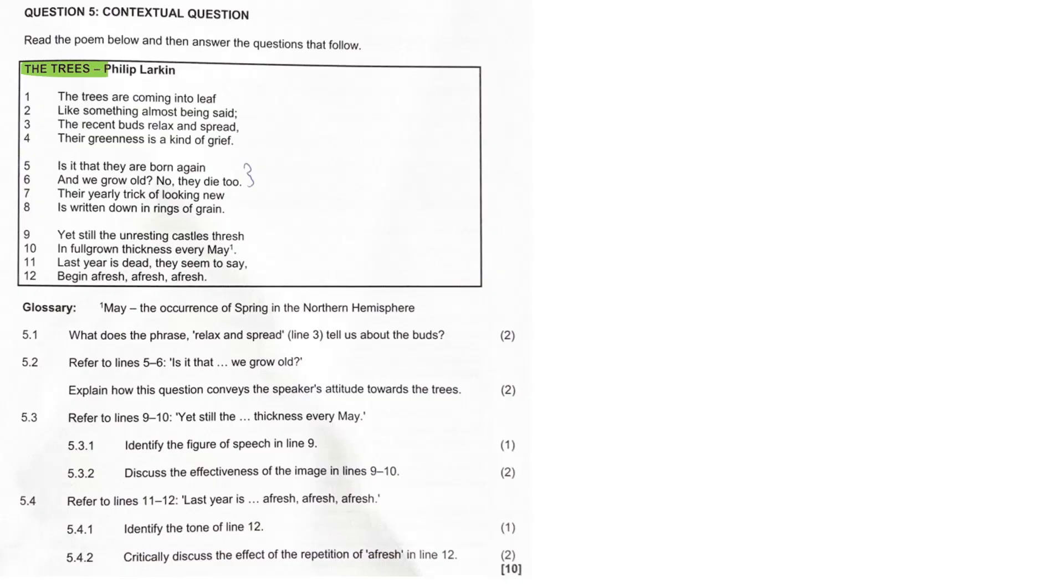Sprouting new leaves and appearing born again while humans age and move closer to death. So that immediate juxtaposition: trees coming back to life and humans they don't come back to life, they don't get any younger. We simply age and move closer to death, the inevitability of death simply. And Larkin uses this natural cycle as a reflection on time, life, and renewal.